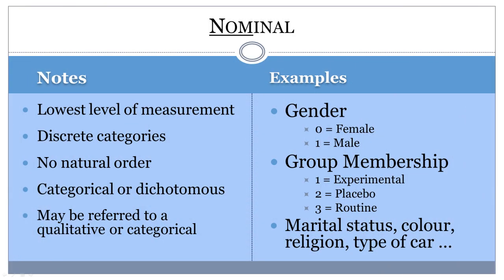The nominal level of measurement is the lowest level. Variables in a study are placed into mutually exclusive categories. Each category has a criteria that a variable either has or does not have. There is no natural order to these categories. The categories may be assigned numbers, but the numbers have no meaning because they are simply labels.